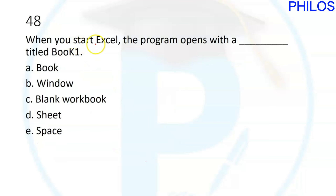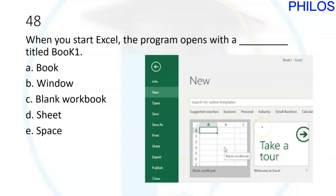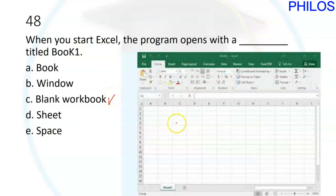Question forty-eight: when you start Excel, the program opens with a blank titled Book1. When you open Excel, the first thing displayed is a blank workbook option, and when you click on it, it is titled Book1. The correct answer to question forty-eight is C: blank workbook.